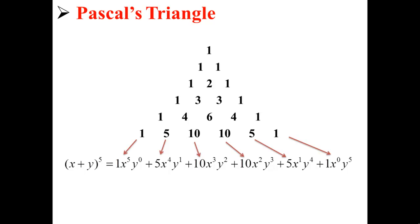So x plus y to the fifth is equal to 1x to the fifth y to the zero, plus 5x to the fourth y to the first, plus 10x to the third y to the second, plus 10x squared y to the third, plus 5x to the first y to the fourth, plus 1x to the zero y to the fifth. The x terms start from our degree, 5, and go downwards to zero — so they go 5, 4, 3, 2, 1, zero.